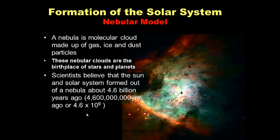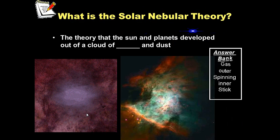So the formation of the solar system — the nebular model. What is a nebula? When scientists look out into deep space they see a lot of nebulas. These nebulas are huge, massive molecular clouds made up of gas, ice, and dust particles — mostly gas. These nebular clouds are the birthplace of stars and planets. Scientists believe that the Sun and solar system formed out of one of these nebulas about 4.6 billion years ago.